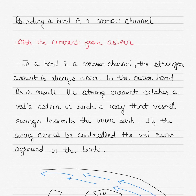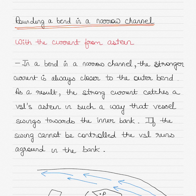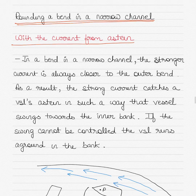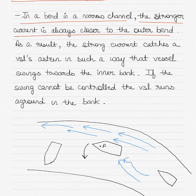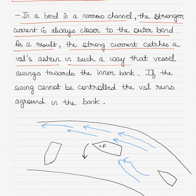In today's video on ship handling, I want to talk about rounding a bend in a narrow channel. In the first case — rounding a bend with the current from astern — I have used diagrams to convey the point. In a bend in a narrow channel, the stronger current is always closer to the outer bend, as shown in the diagram. As a result, the strong current catches the vessel's stern in such a way that the vessel may swing towards the inner bank.